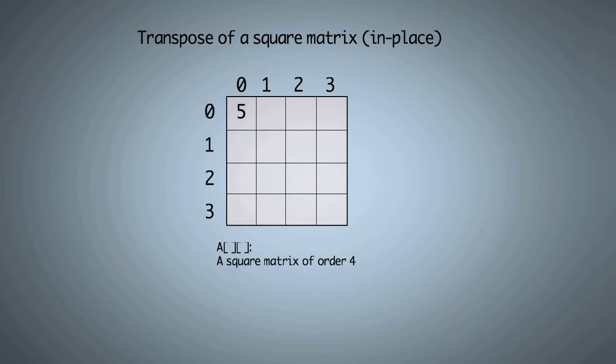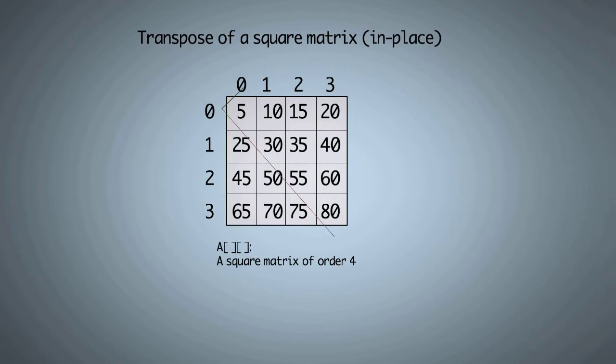For example, let's say we have to find the transpose of a 4x4 square matrix. First, please note that diagonal of the transpose matrix does not change. It remains same as the original matrix, so we will keep it as it is.